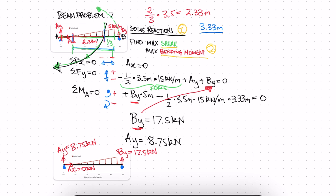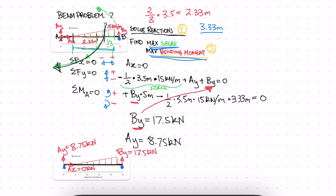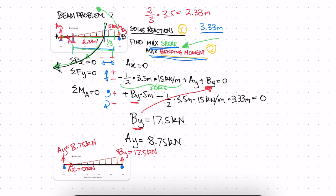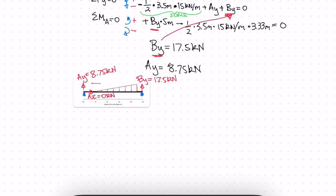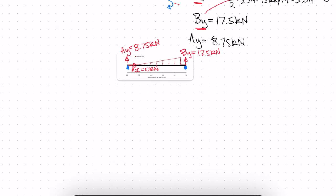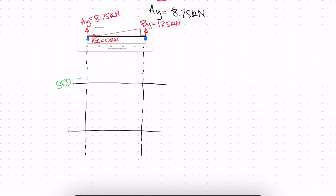In this second part we're going to find the max shear and the max bending moment. We need to find where the shear is equal to zero, because that will be the same point where our bending moment is maximum. We'll draw our shear force diagram with its positive and negative sides, and our bending moment diagram with its positive and negative sides.